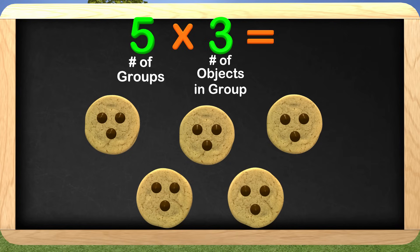Can you please tell me how many chocolate chips there are in all? There are 15 chocolate chips! Great job! We have 5 cookies, which represent the number of groups, and 3 chocolate chips on each cookie that represent the number of objects in each group. Counting all the chocolate chips gives us 15!